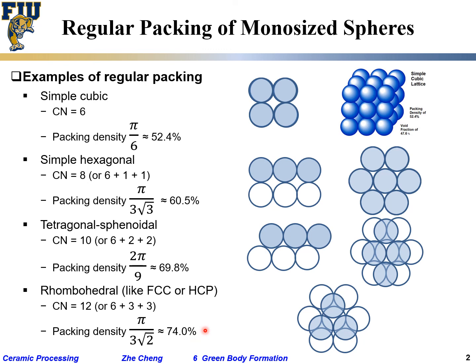This 74% is the highest possible for monosize spheres — meaning every particle has the same size and diameter, and is spherical. If you have cubes, you get different packing. But for monosize spheres, 74% is the highest. In reality, for actual powder, even if it is monosize, you may not be able to reach this just by random packing. The likelihood that you reach FCC/HCP packing with actual powder handling is not high — you have to be very careful.